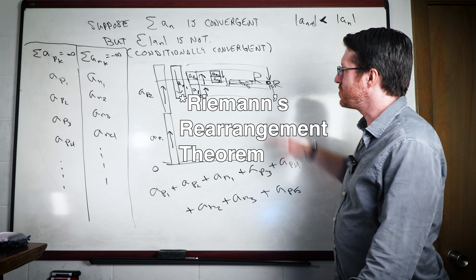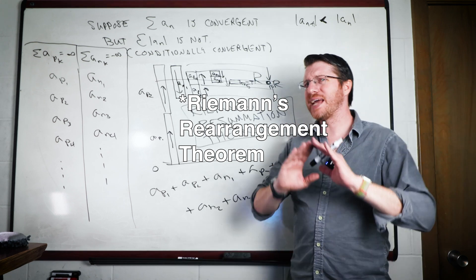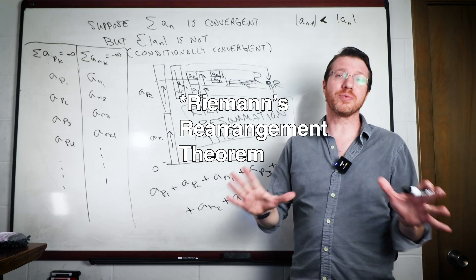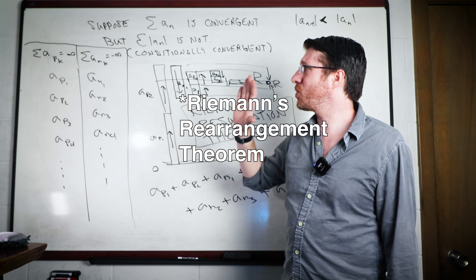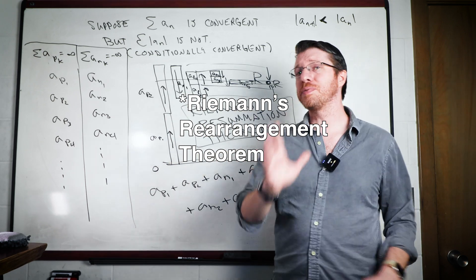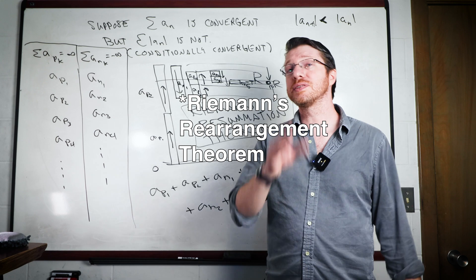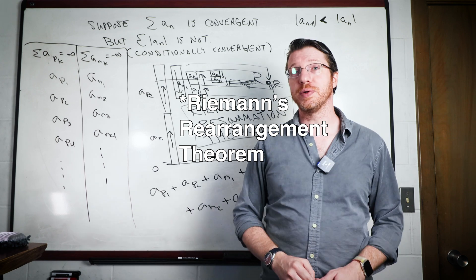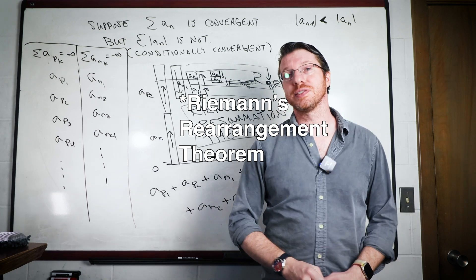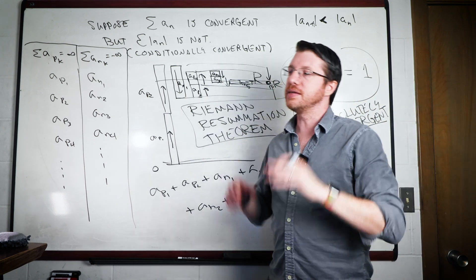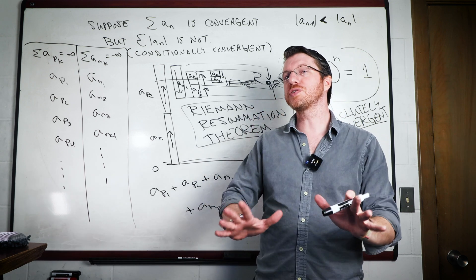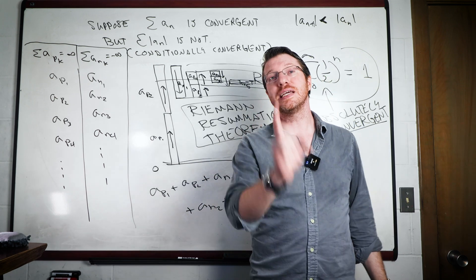And that's the Riemann rearrangement theorem, or at least a cartoon sketch of how this ends up going. That is probably one of the most counterintuitive results in all of real analysis. It confused mathematicians of the 19th century for a long time, and it tells us to be very careful if you're reordering the sum, because sums depend on the order of the sequence, unless you're working with an absolutely convergent series. Thank you so much for watching, and I hope you have a good day.